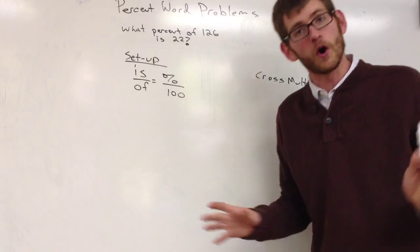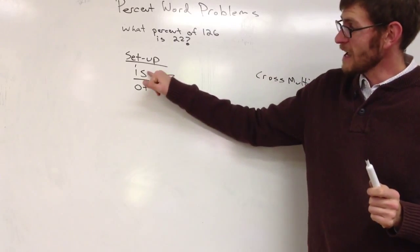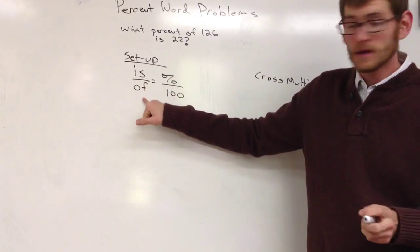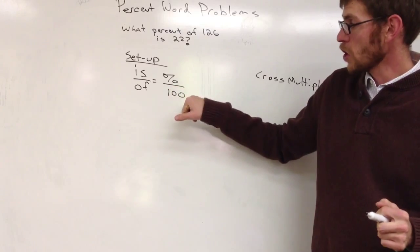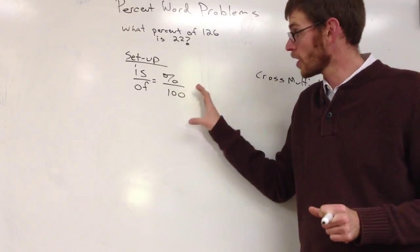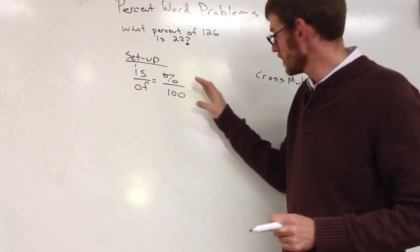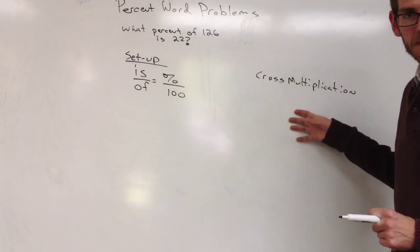Our setup, the way we set up all these problems is is over of equals percentage over 100. After we get the information into our setup or our equation, then we'll go over how to cross multiply.